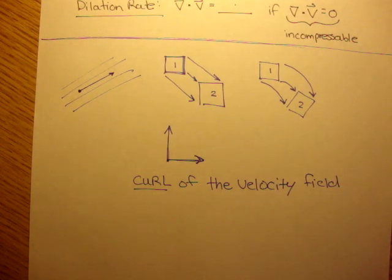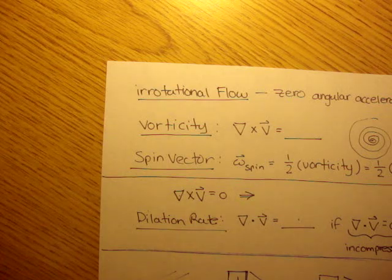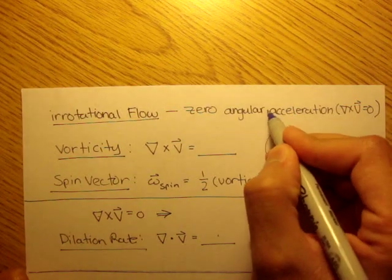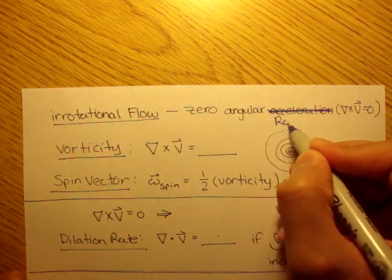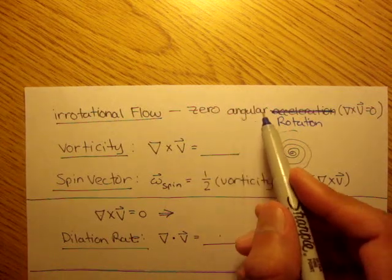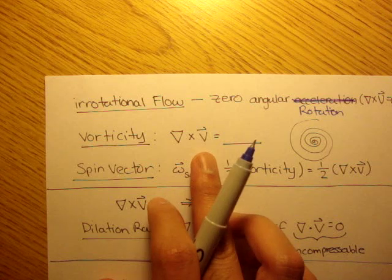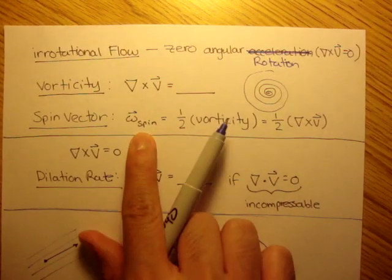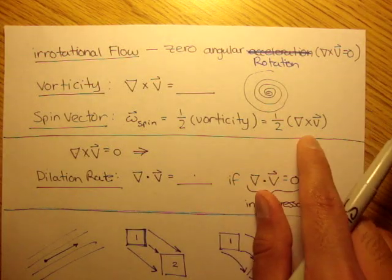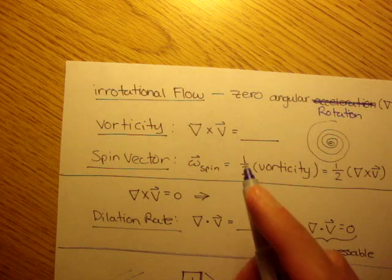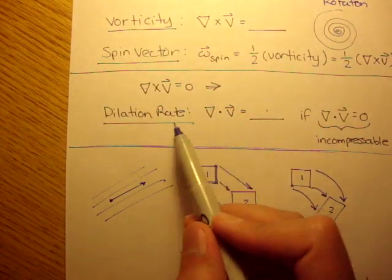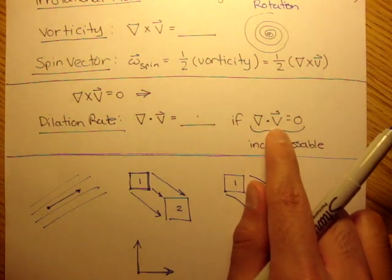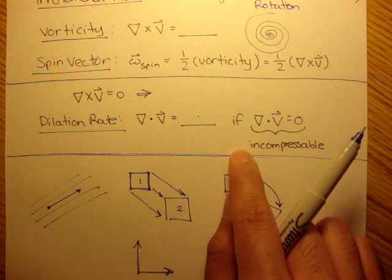In the next couple of videos, we'll do some examples involving these four definitions. Irrotational flow is when the angular rotation is equal to zero. Vorticity is just del cross v — whatever number that is, that's the vorticity. The spin vector is just one half of the vorticity, one half of del cross v. And dilation rate is del dot v — a dot product. If del dot v equals zero, we know the fluid is incompressible.